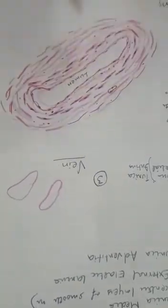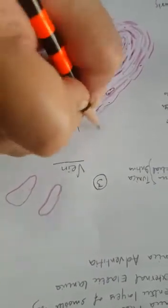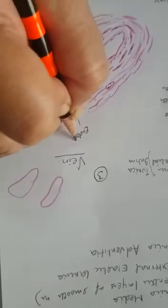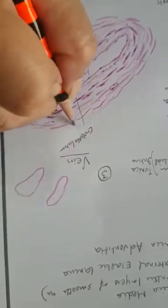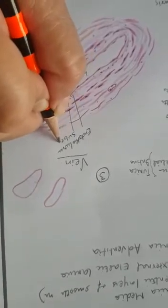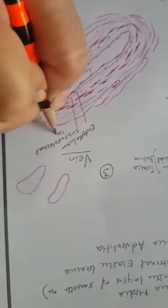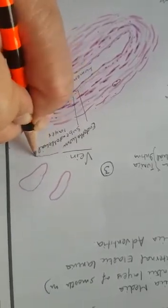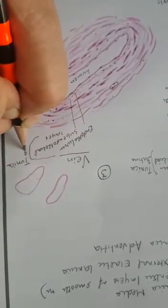Now you label the diagram. This is endothelium, this is subendothelium layer, both forming tunica intima.